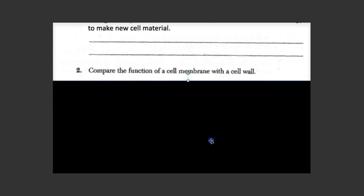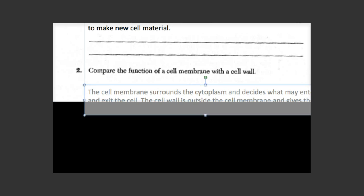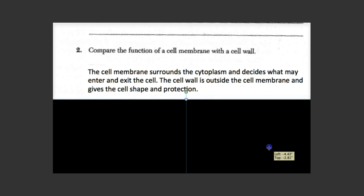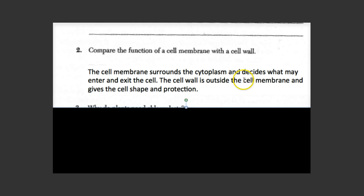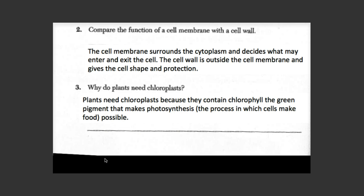Number two: Compare the function of a cell membrane with a cell wall. The cell membrane surrounds the cytoplasm and decides what may enter and exit the cell. The cell wall is outside the cell membrane and gives the cell shape and protection. Number three: Why do plants need chloroplasts? Plants need chloroplasts because they contain chlorophyll, the green pigment that makes photosynthesis possible, and photosynthesis is the process which makes the cell food — that's how a plant gets glucose.